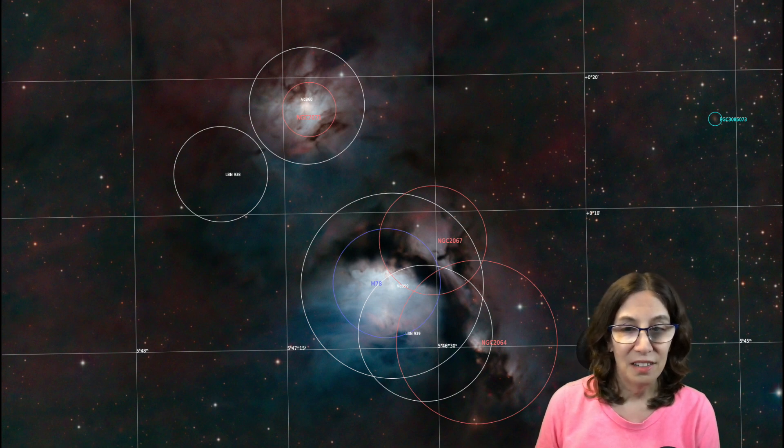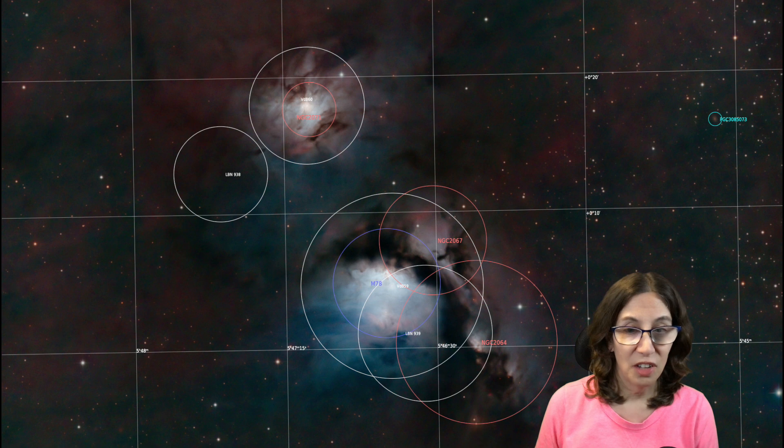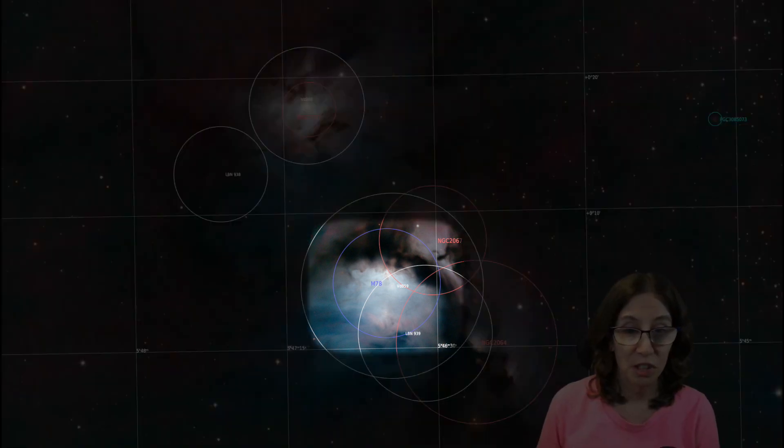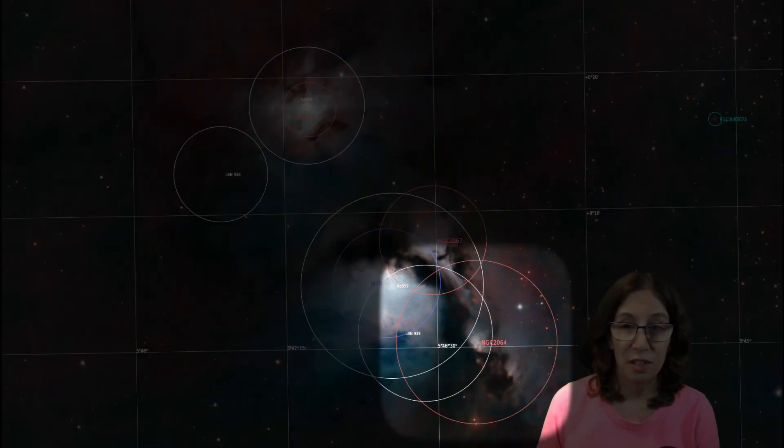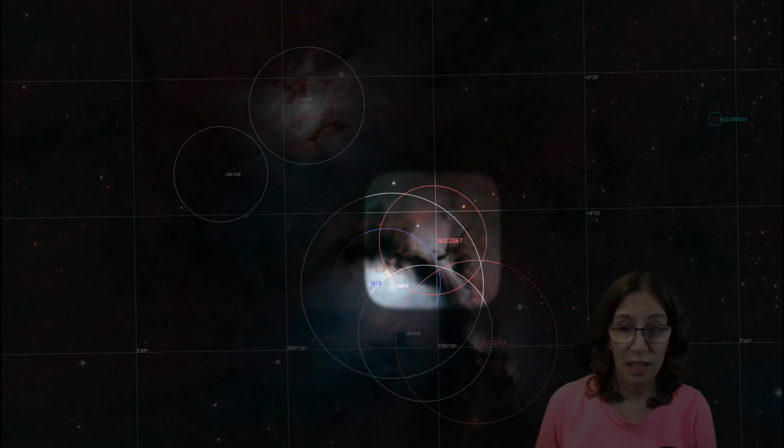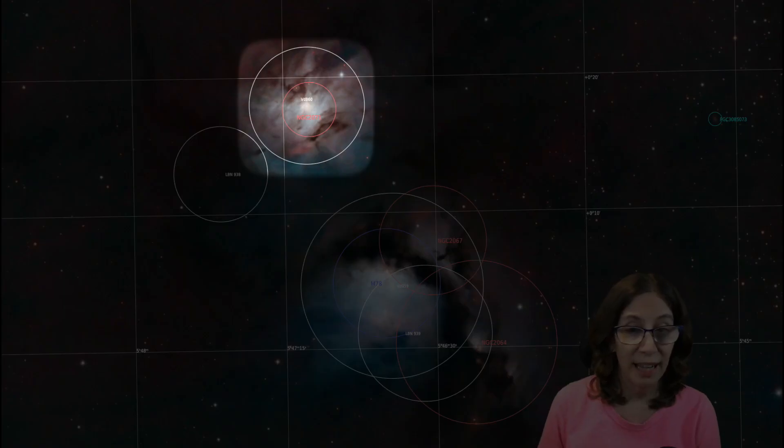Here's an annotated version of my image. M78 is actually a relatively small part of the picture. It's the brightest of several reflection nebulae in the image. We also have NGC 2064, 2067, and 2071 hanging out nearby.